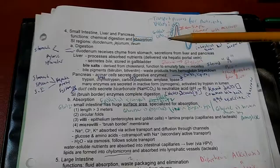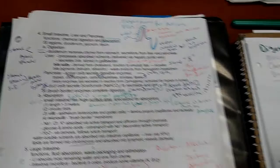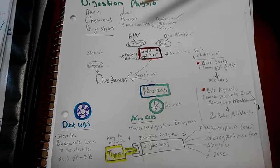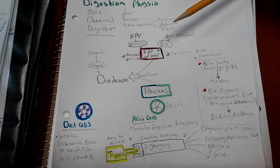Physiology for small intestine, liver, and pancreas. Speaking of chemical digestion, we have particularly three major organs: liver, pancreas, and small intestine. The small intestine has three regions: duodenum, jejunum, and ileum.